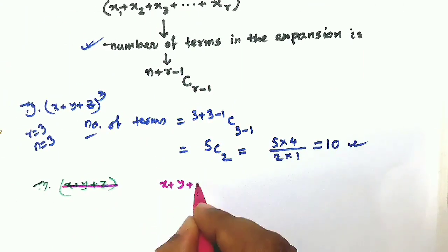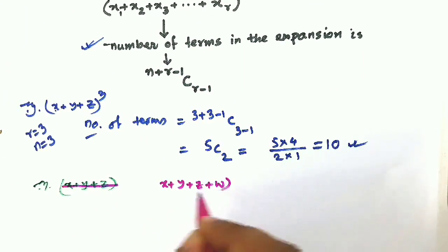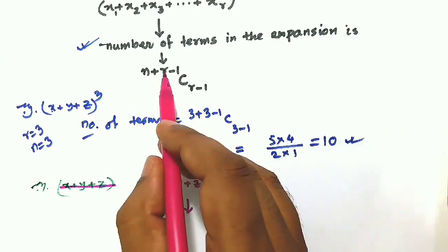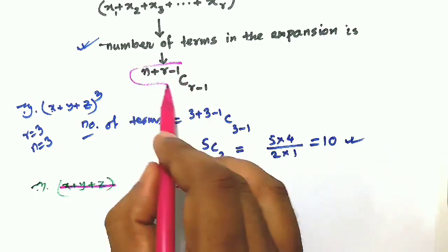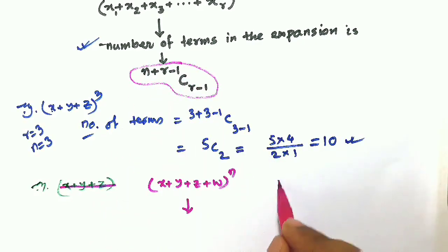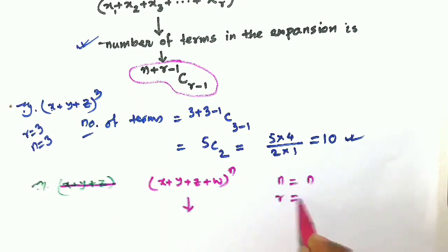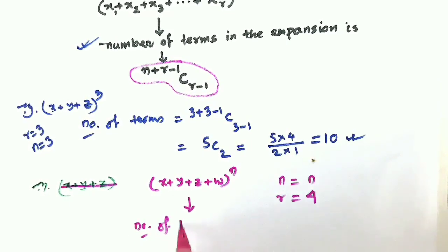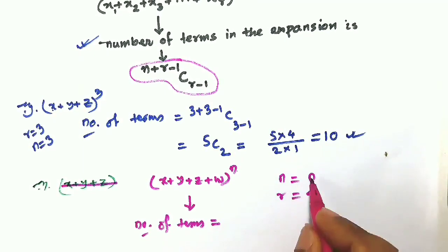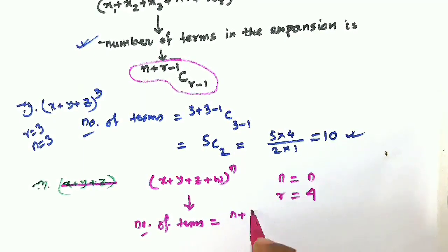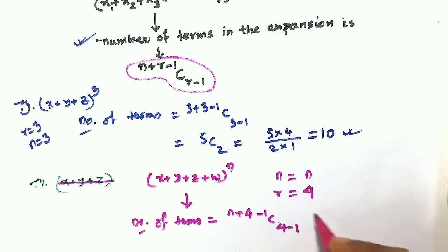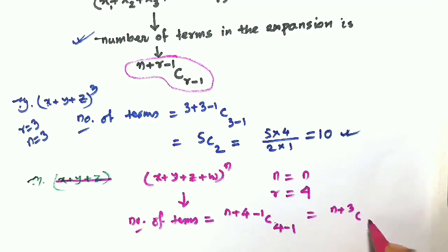Consider (x + y + z + w)ⁿ. How many terms will there be? The formula gives n+r-1 C r-1. Here n is as usual n, and r equals 4 since there are 4 terms. So the number of terms equals n+4-1 C 4-1, which is n+3 C 3.